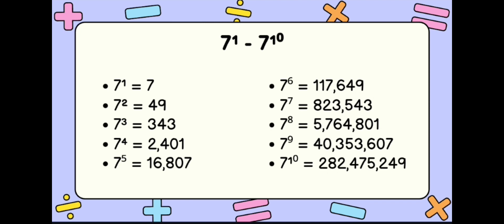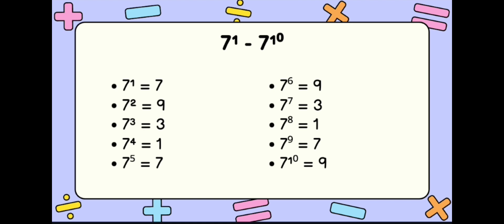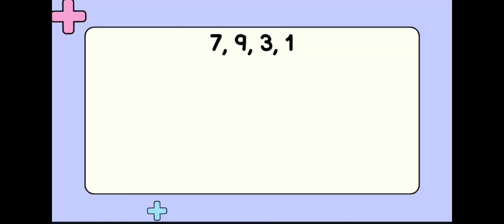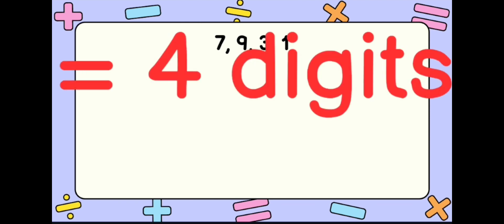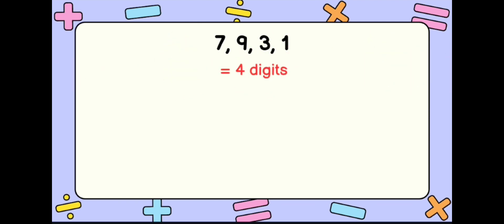As we can see, the rightmost digits — the unit digits — are repeating. We simplify by keeping only the unit digits. The repeating unit digits are 7, 9, 3, 1. So we have 4 digits in the repeating cycle. The next step is to divide the exponent by the total number of repeating digits.